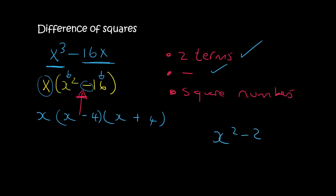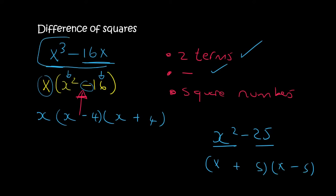If I give you something like x squared minus 25, there is no common factor, but both terms are already square numbers. So we can go straight into our double brackets: x times x, 5 times 5, and then one bracket gets a plus and one gets a minus. In the previous example we had to take out a common factor first, and then the bracket left over became a difference of squares.